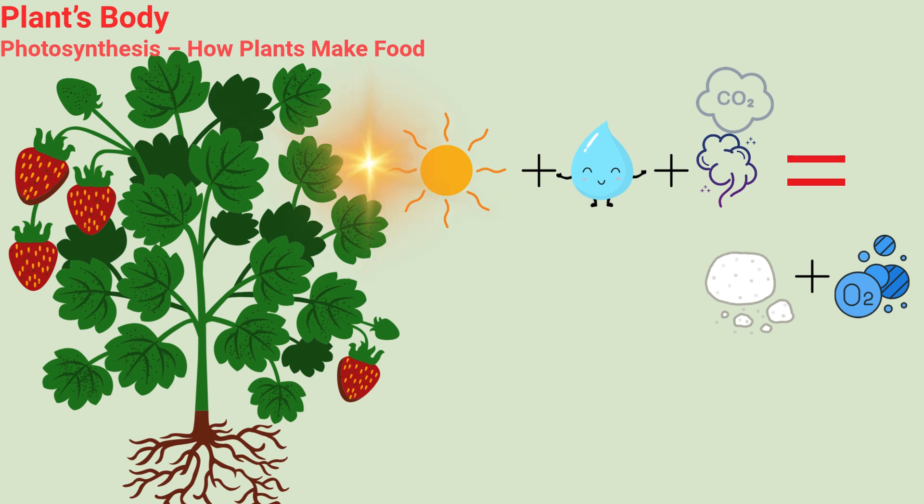Plants use sunlight, water from roots, and air from around them to make their own yummy plant food. They do this inside their leaves, using a green colour called chlorophyll. So leaves are like little chefs cooking food for the plant.